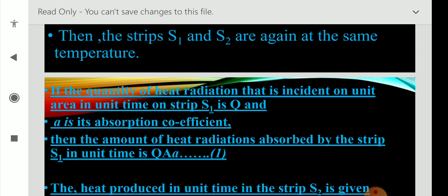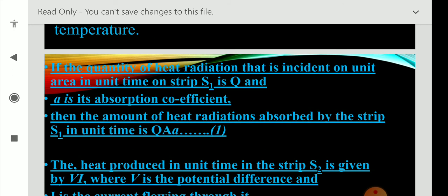Then in S2 and S1, what is happening? The quantity of heat radiation that is incident on unit area in unit time on strip S1 is considered as Q. A is the absorption coefficient. Then what is the total amount of heat radiation absorbed by the strip S1? That we can consider as Q times A times a. This will be taken as equation 1.